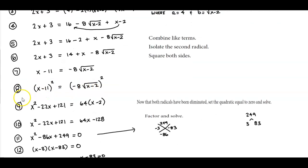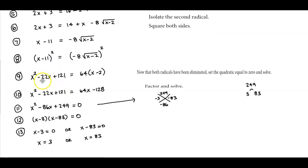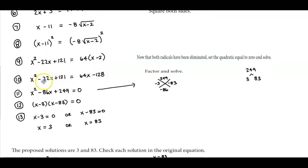To get rid of this remaining radical, we square both sides again. We can square even though there's a coefficient being multiplied. So (x minus 11) squared gives x squared minus 22x plus 121. Negative 8 squared is positive 64, and squaring the square root of x minus 2 gives x minus 2. Distributing the 64 gives 64x minus 128.